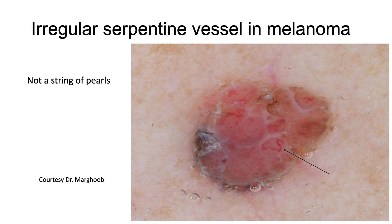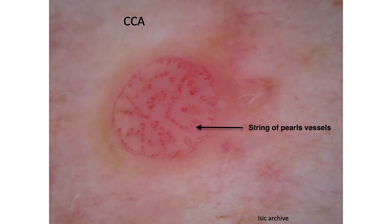Sometimes we'll see something like an irregular serpentine vessel in a melanoma, and this is not a string of pearls. Here is a beautiful string of pearls pattern from the ISIC archive, part of the IDS.